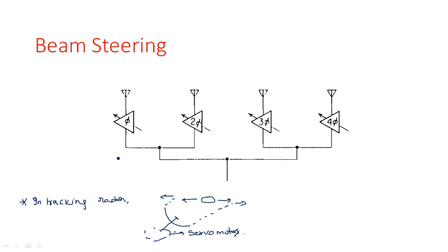The main purpose of phased array antennas is to transmit or receive signals in any particular direction — whether 90 degrees, 60 degrees, or any direction — irrespective of the physical orientation of the antenna. You can rotate the radiation pattern in any direction without rotating the antenna plate. Beam steering means the radiation pattern can be rotated in any direction while the antenna plate remains fixed.